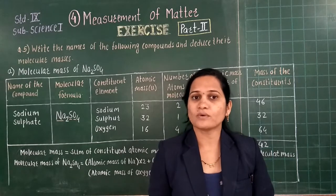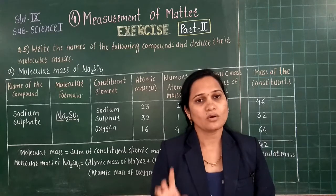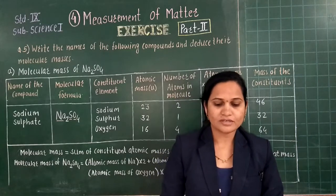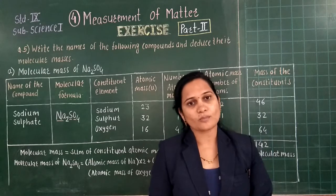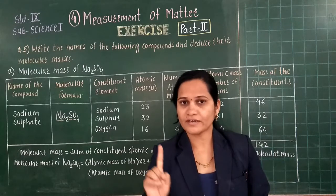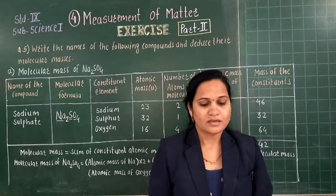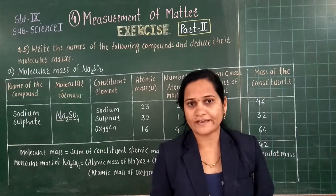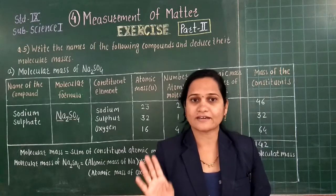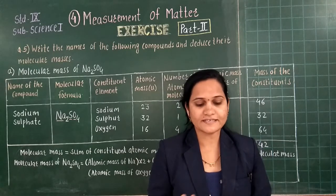When sodium atom gives 1 electron, 8 electrons remain in the outermost orbit of sodium atom. So it becomes stable, and therefore a sodium atom gives away 1 electron, a cation of sodium is formed, and the valency of sodium is 1. Therefore the element sodium is monovalent. Mono means single and valent means valency, so single means 1 valence electron is there.